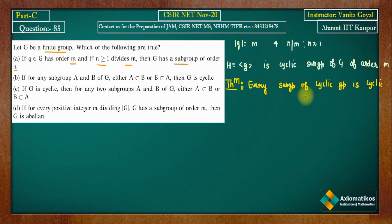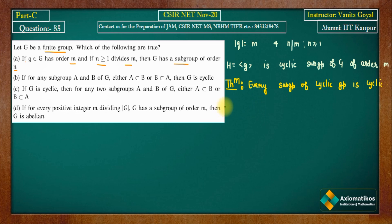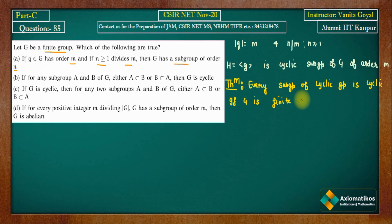We now talk about subgroups of a finite cyclic group. If G is a finite cyclic group, then for each divisor of its order, there exists exactly one cyclic subgroup of that order.